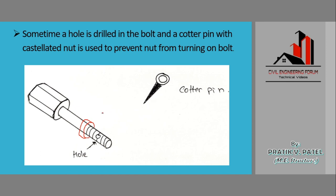Today we talked about what is a black bolt — the first type of bolt in bolted connections. In the next lecture we'll be talking about the high strength bolt, the second type. Thank you for watching, and wait for the fourth part of the topic 'Connection.'